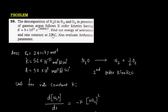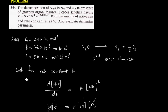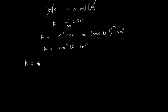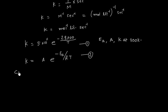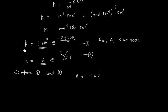Now the question gives the rate constant by a specific expression. We have to find the activation energy, the Arrhenius parameter, and the rate constant at 300 K. Recalling the standard Arrhenius equation k equals A times e to the power minus Ea over RT, we can compare the two equations. From comparison, A equals 5 times 10 to the power 11, which is the Arrhenius pre-exponential parameter, and it has the same unit as k.